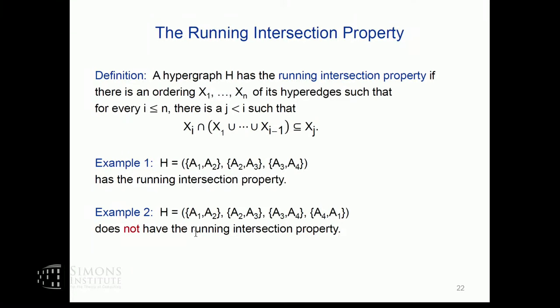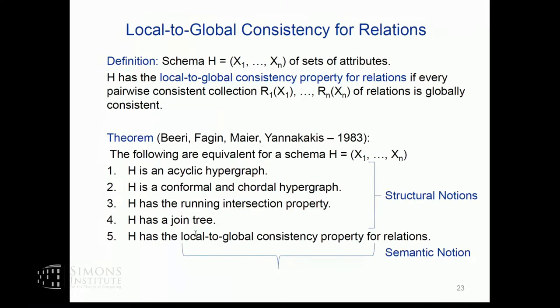So let me restate the theorem and make the point: these four properties are structural notions, the fifth is a semantic notion, and the theorem tells you the semantic property is equivalent to any of these four structural properties. To appreciate the algorithmic consequence: if given a hypergraph you ask whether it has the local-to-global consistency property, on the face of it you must examine all relations — but translated, there is a simple algorithm: compute a join tree and check if it exists.